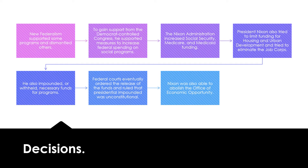New Federalism supported some programs and also dismantled others. To gain support from the Democrat-controlled Congress, Nixon supported measures to increase federal spending on social programs. He increased Social Security, Medicare, and Medicaid funding. However, Nixon also tried to limit funding for the Housing and Urban Development Office and tried to eliminate the Job Corps, which had been established under President Kennedy.